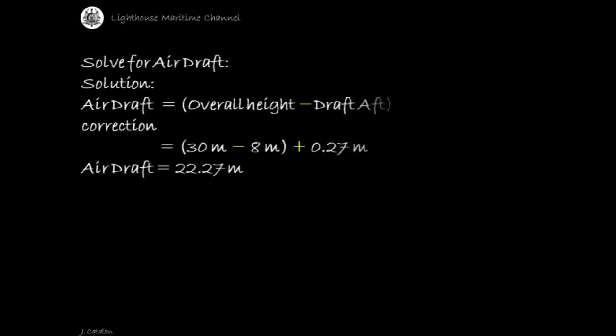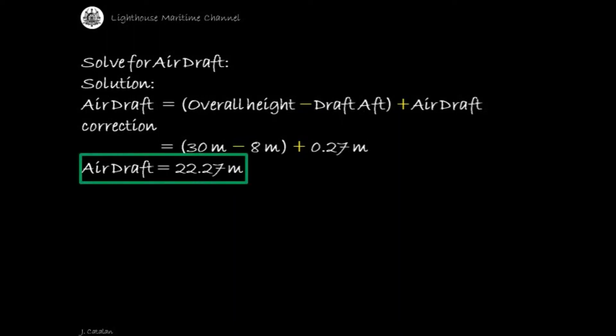Solve for air draft. Solution: air draft = (overall height − draft aft) + air draft correction. Substituting: (30 meters − 8 meters) + 0.27 meters. The result is the air draft, which is equal to 22.27 meters.